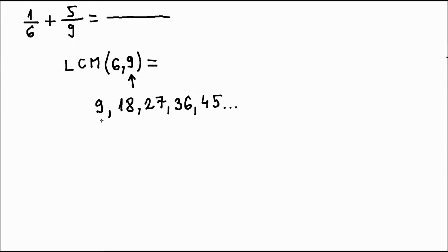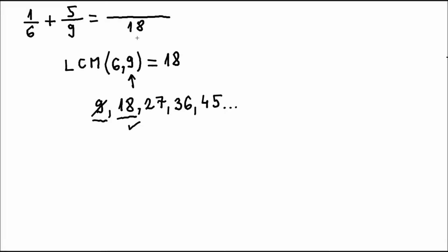Let's take a look at them in order and see if one of them is also a multiple of number six. Can we divide nine by six without remainder? No, we can't — we would have a remainder. So nine cannot be the lowest common multiple. Let's try with eighteen. Can we divide eighteen by six without remainder? Yes, we can. So that is our lowest common multiple and lowest common denominator as well.